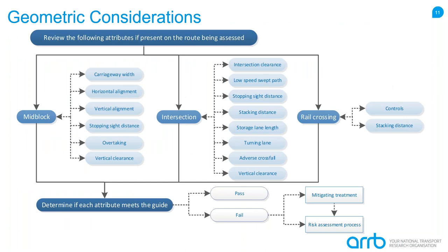To assist users in route assessments, we've developed a flowchart describing the assessment process based on road area, including mid-blocks, intersections, and rail crossings — the three main road areas identified. The flowchart shows which sections of the guide are required for each area. For example, rail crossings mainly require assessment of controls and stacking distances. This is aimed at streamlining the process so users assessing mid-blocks only need to look at the relevant mid-block sections.